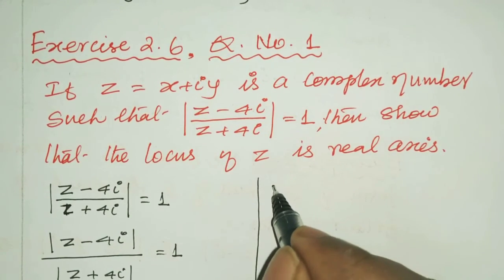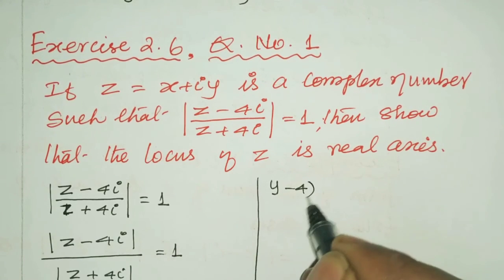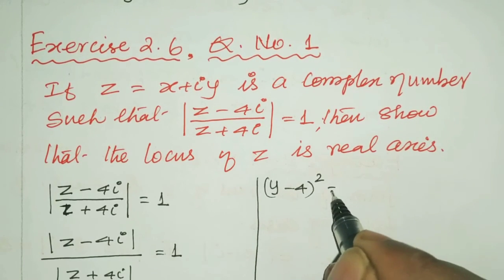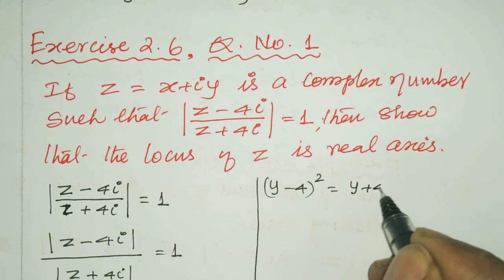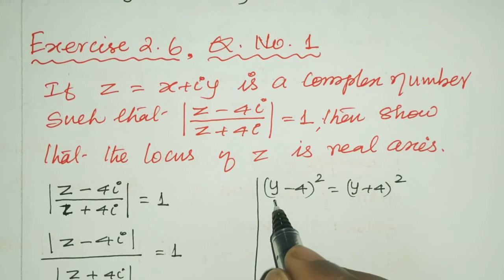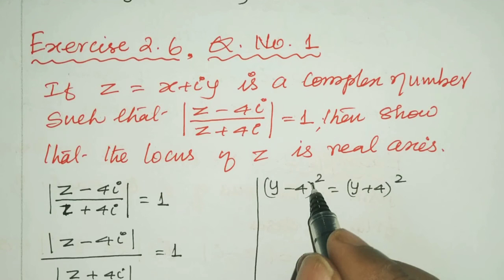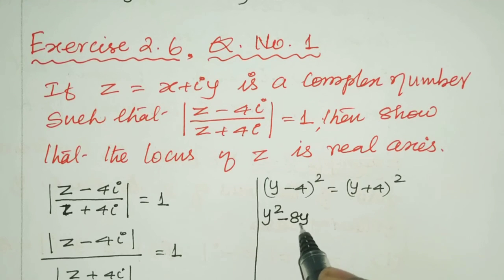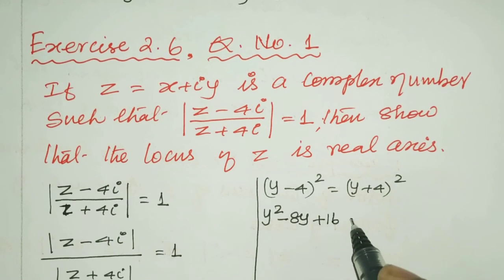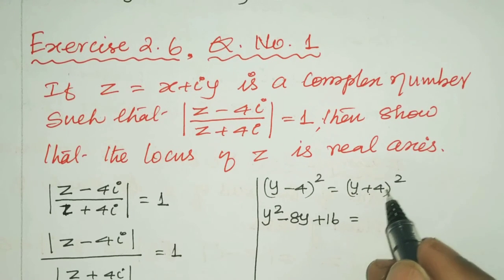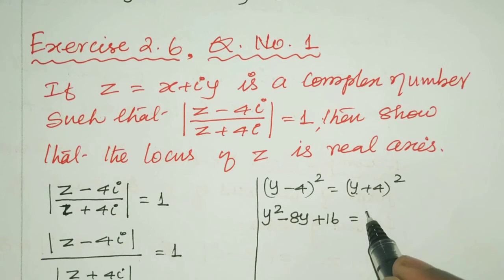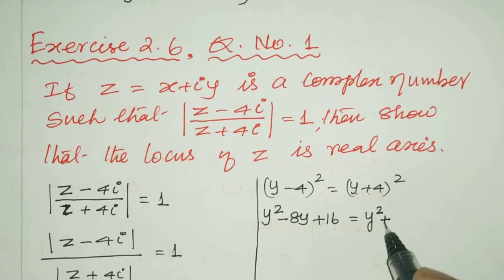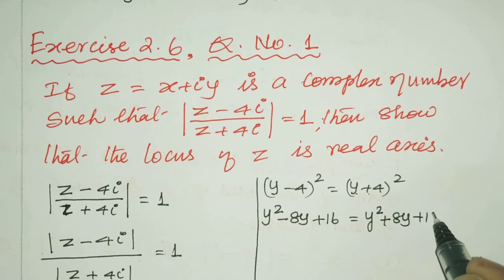Expanding using the (a minus b) whole squared formula: y squared minus 8y plus 16. Expanding the right side using the (a plus b) whole squared formula: y squared plus 8y plus 16.